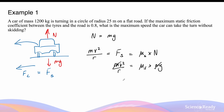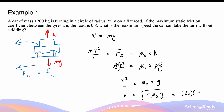The mass of the car cancels out, giving v² over r equals the coefficient times gravity. So the speed is given by the square root of r times μs times g. Substituting the values: radius is 25 meters, coefficient of friction is 0.8, and gravity is 9.8 m/s². Taking the square root gives a maximum speed of 14 meters per second.